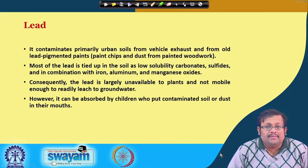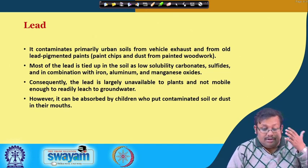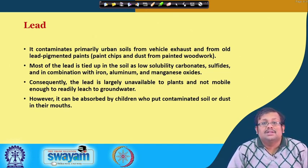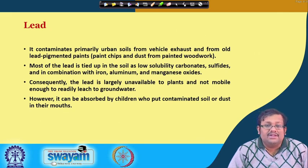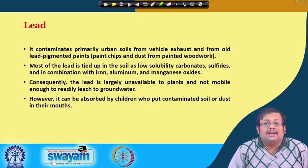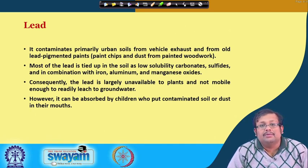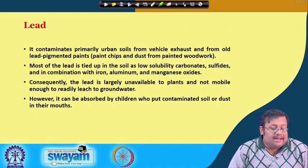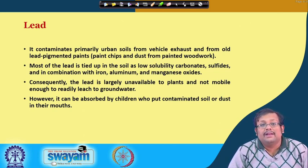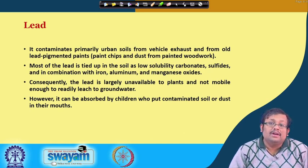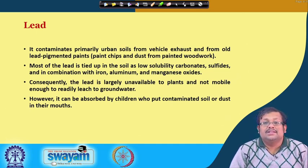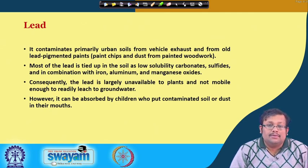The next important heavy metal is lead. It contaminates primarily urban soils from different types of vehicle emissions and exhaust, and from old lead-pigmented paints, paint chips, or different types of painted woodwork. Most of the lead is tied up in the soil as low-solubility carbonates and sulfides, and in combination with iron, aluminum, and manganese oxides. Consequently, lead is largely unavailable to plants and not mobile enough to leach into groundwater. However, lead can be absorbed by children who put contaminated soils or dust in their mouths.